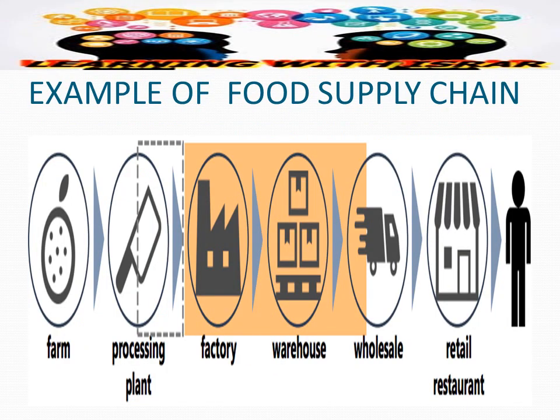Let's look at an example of a food supply chain which starts from farms and ends at the customer: farms, then traders, then processing plants, then factories, then warehouses, then wholesalers, then retail restaurants, and finally reaching you as food. Next time you go to a restaurant and order food, think about the total supply chain and where it started — that way you will understand how it works. I hope you liked the first lecture; if you have any questions, please write them down and I will try to answer them. Thank you for your time.